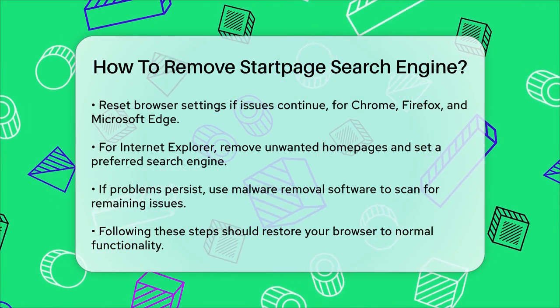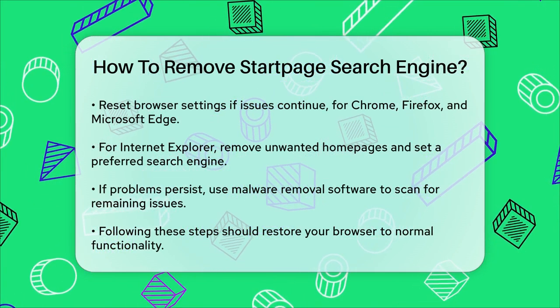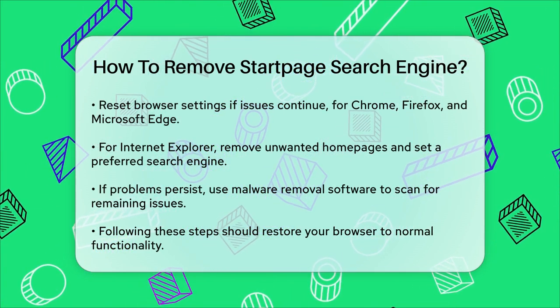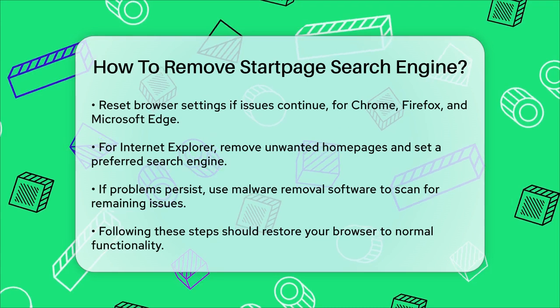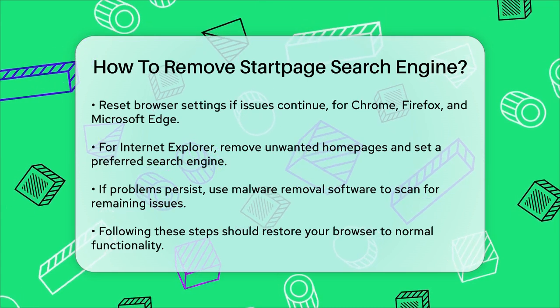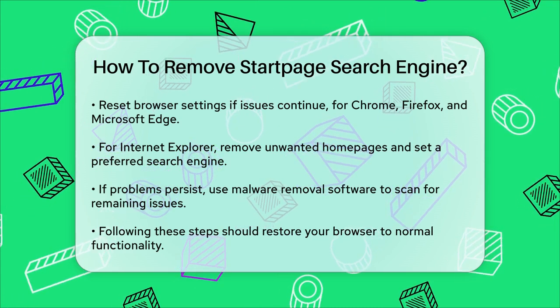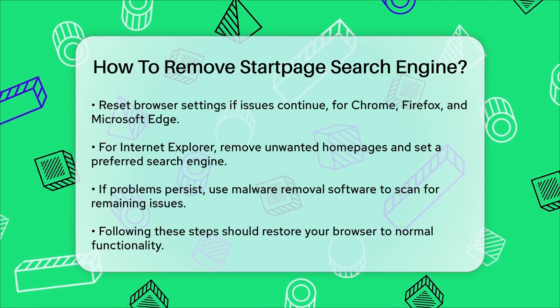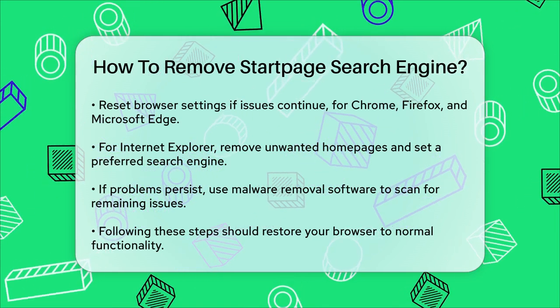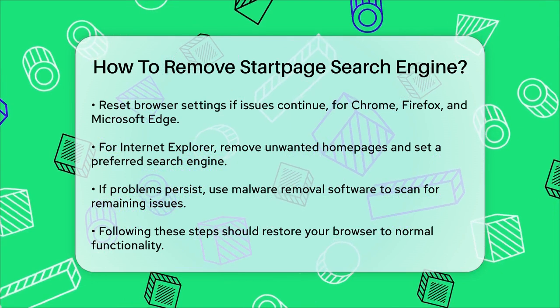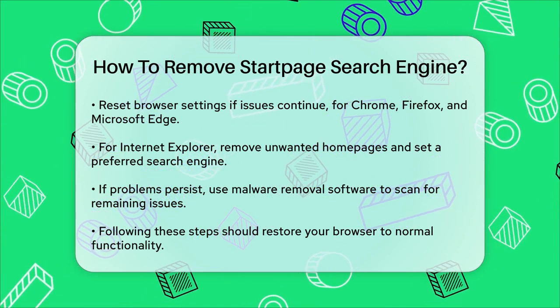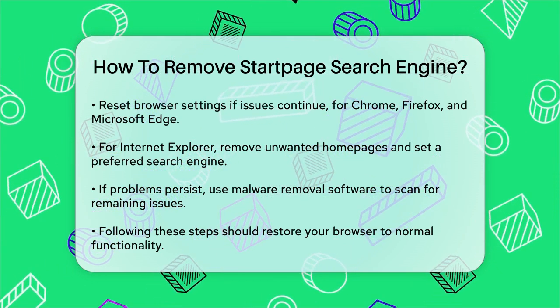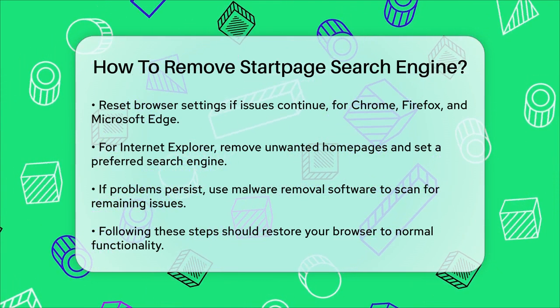Additional steps for Internet Explorer: click the Gear icon, select Internet Options, and remove the unwanted homepage. Go to Manage Add-ons, select Search Providers, and set your preferred search engine as the default, then remove the unwanted one.